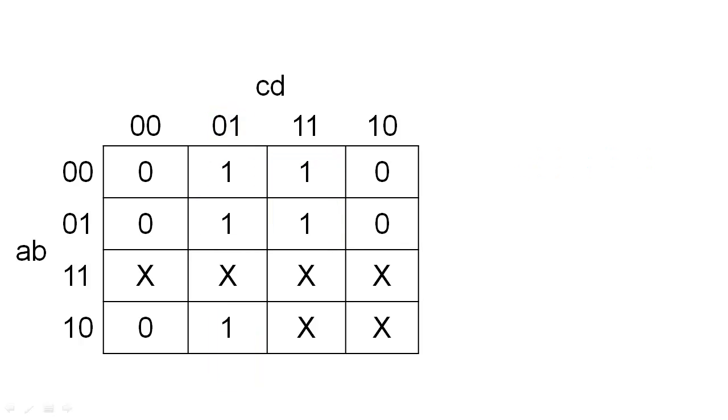Because our circuit will never receive the binary encodings of 10 through 15, we technically don't care what the circuit outputs for these input combinations. When we don't care what the output of the circuit is for specific input combinations, we place an X in the corresponding cell.